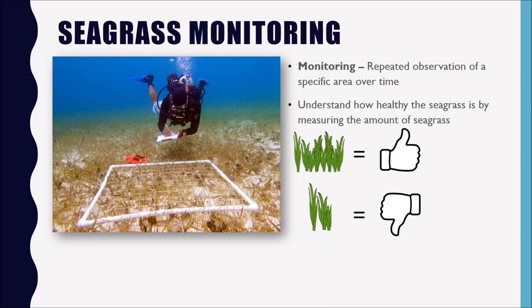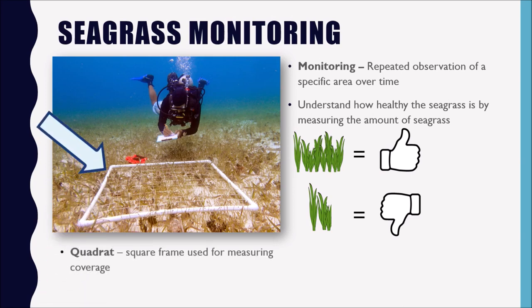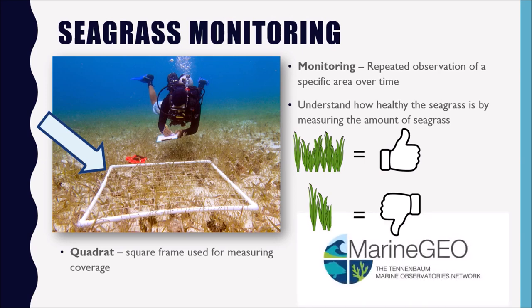To determine whether the amount of seagrass in an area is changing over time, researchers use something called a quadrat — basically a lightweight frame made out of plastic PVC pipes placed over the seagrass. From there, researchers can calculate the amount of seagrass coverage inside the frame and the number of species they observe. From that information, researchers make broader estimates of seagrass coverage in an area, returning to the same spot over and over to record changes. Researchers at the Smithsonian Marine Station participate in seagrass monitoring and are part of an observation network called MarineGEO — I encourage you to do a web search on MarineGEO and read about their work.